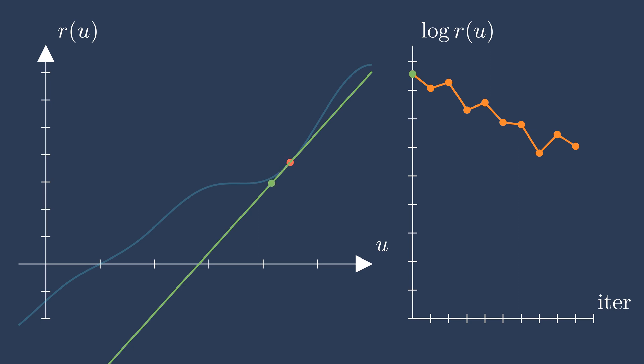Then we update our guess to the state that makes the linear approximation have a residual of zero. This method, called Newton's method, converges much more quickly than the first approach, especially when it gets close to the solution.